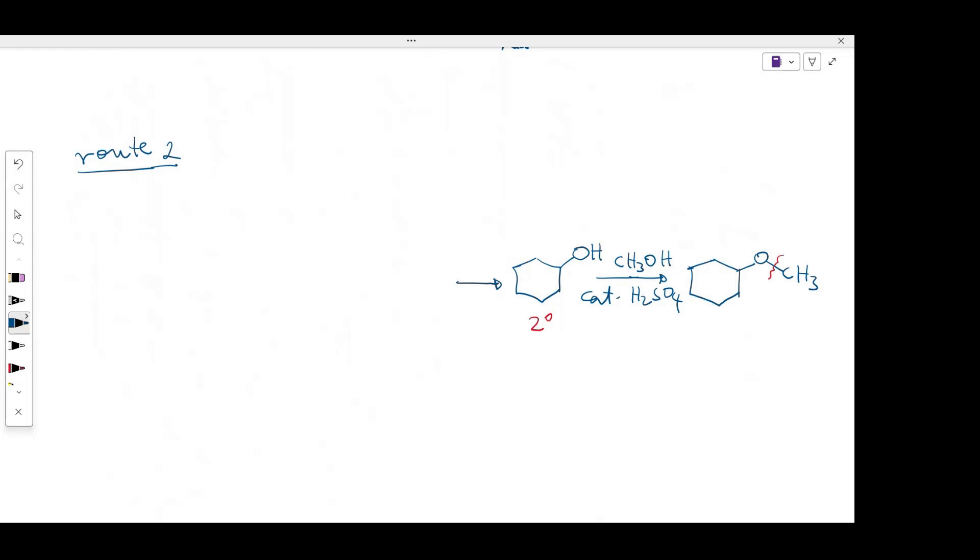I can make this alcohol by looking for reagents that can add hydrogen and OH group across the double bond of the alkene. So here we could use water and catalytic sulfuric acid. Then the next question becomes, how can we make this alkene?